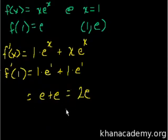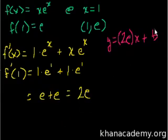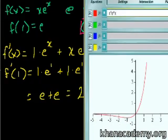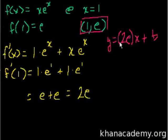So what is the equation of the tangent line? It's going to take the form y = mx + b — the slope-intercept form from algebra. The slope is going to be 2e, so it's 2e times x plus the y-intercept b. If we can figure out the y-intercept, we are done. If we knew a point (x, y) on this line, we could solve for b. And we do know a point: the point (1, e), which is where we're finding the tangent line — and by definition the tangent line goes through that point.